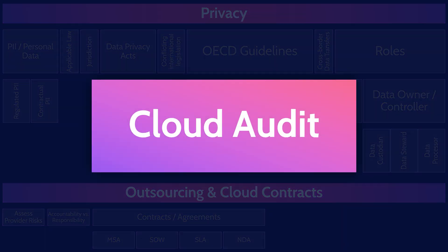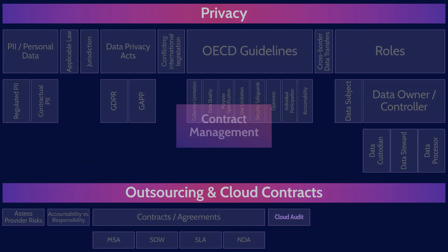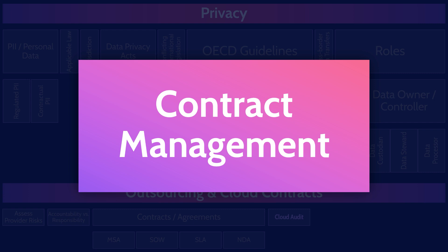As a cloud customer, you generally aren't able to audit your provider yourself. Most big cloud providers will not provide a right to audit. Instead, you'll have to rely on third-party audits to provide the assurance you're looking for. Contract management is important for ensuring that both the provider and the customer fulfill their duties. It can involve a range of stakeholders throughout the customer organization, including legal, IT, security, finance, compliance, operations, and leadership. Contract management involves reviewing initial contracts to ensure they include key requirements, then monitoring the contract throughout the relationship. If there are disputes, you may need to pursue arbitration and termination of the contract.